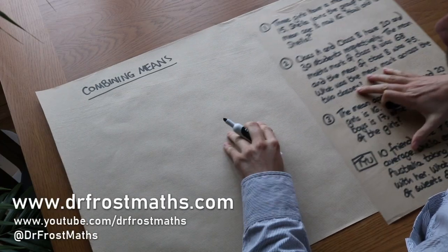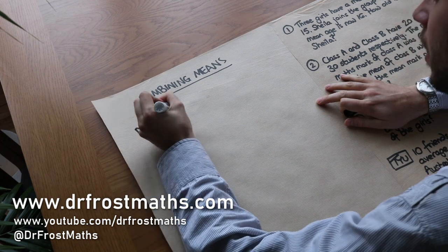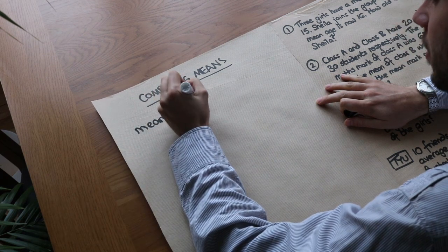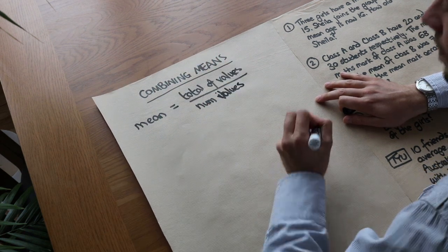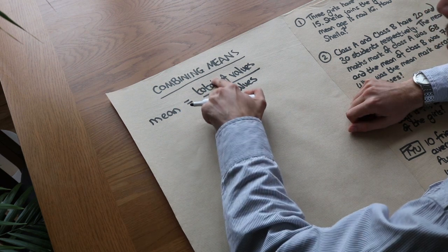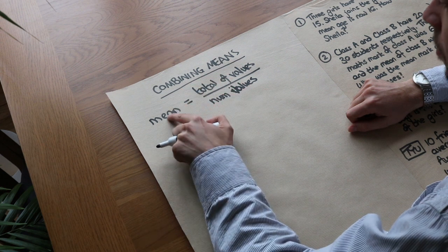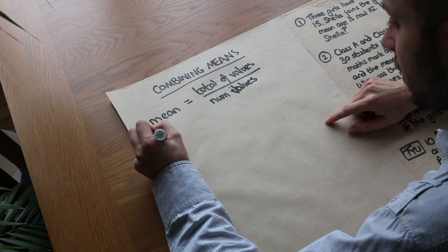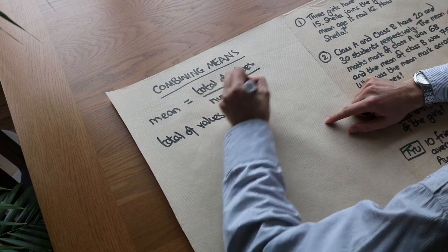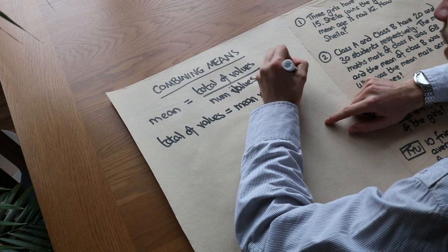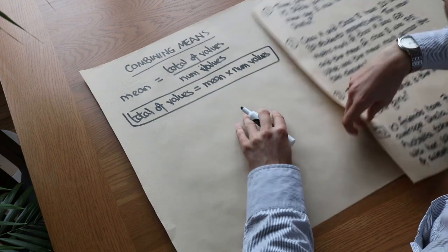Hello and welcome to this video on combining means. If we wanted to find the mean of some values, the mean would be the total of the values — we add them up and divide by the number of values. We can rearrange this formula: the total of the values is equal to the mean times the number of values. This rearrangement is basically all we will need for the various questions we're going to see.